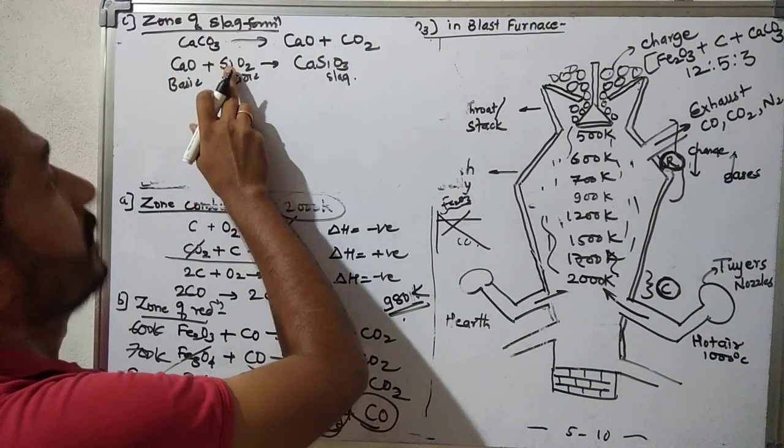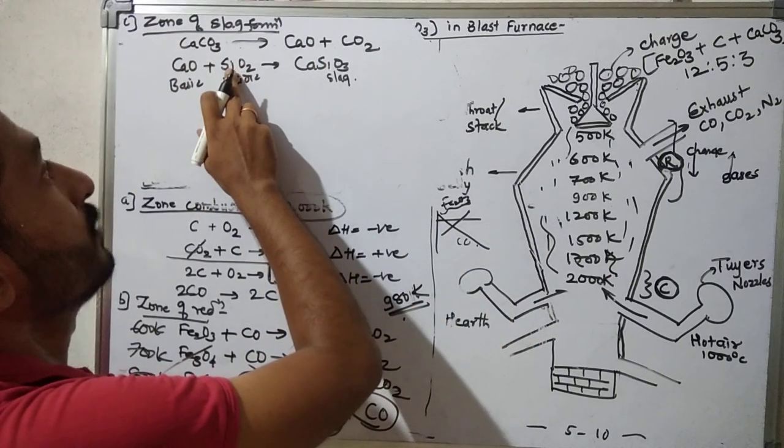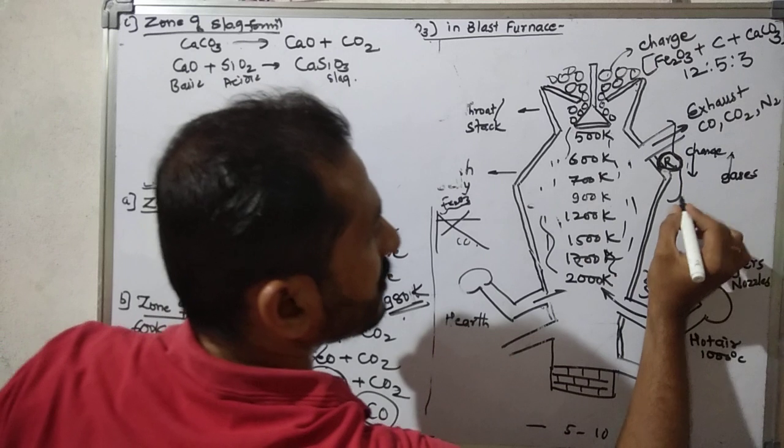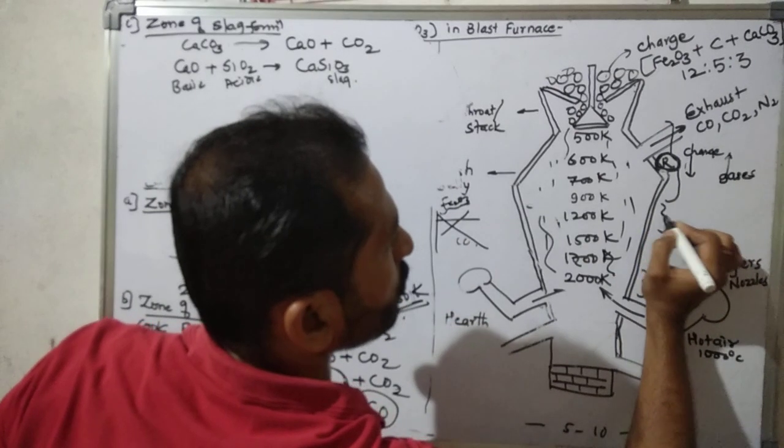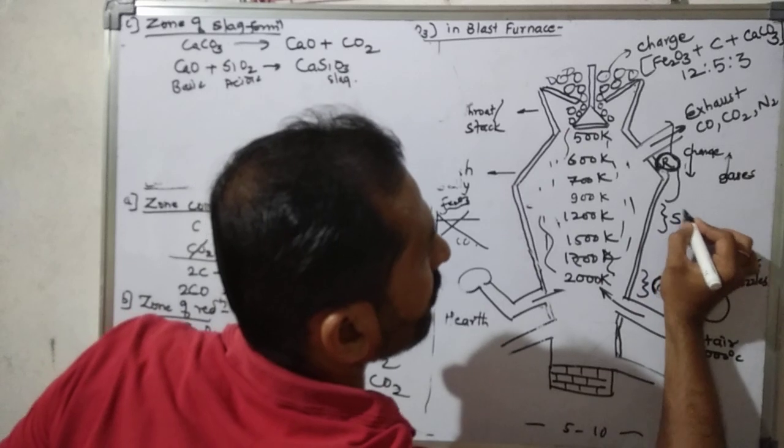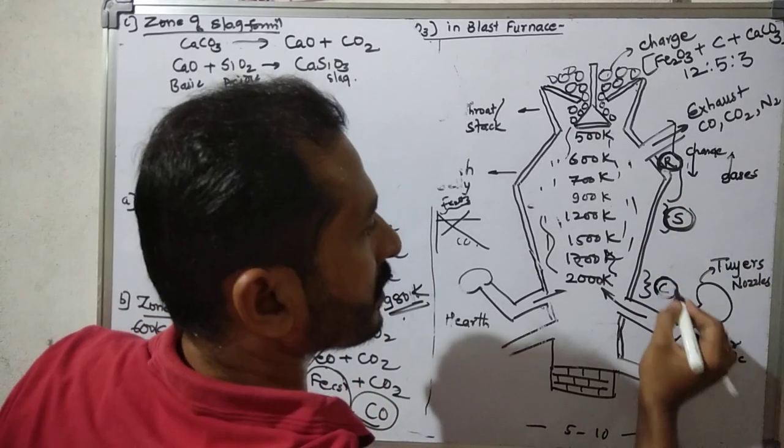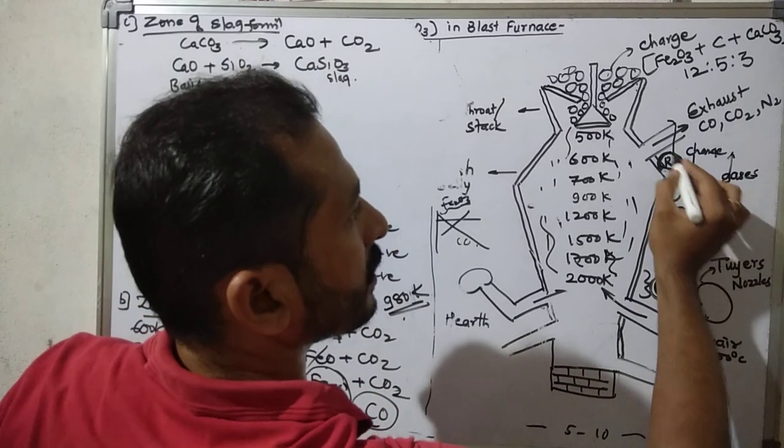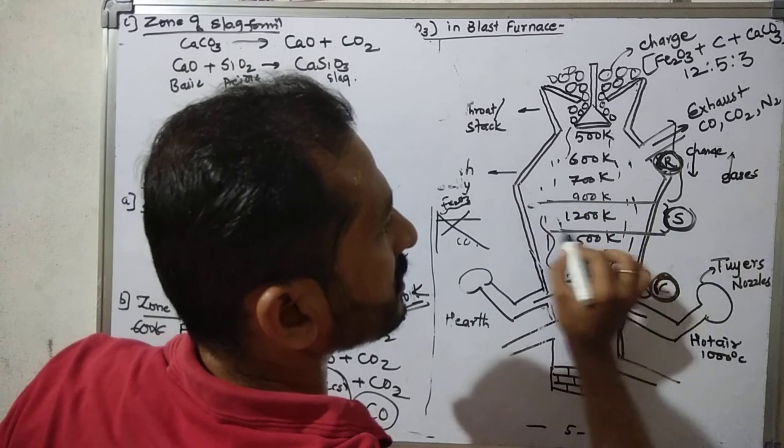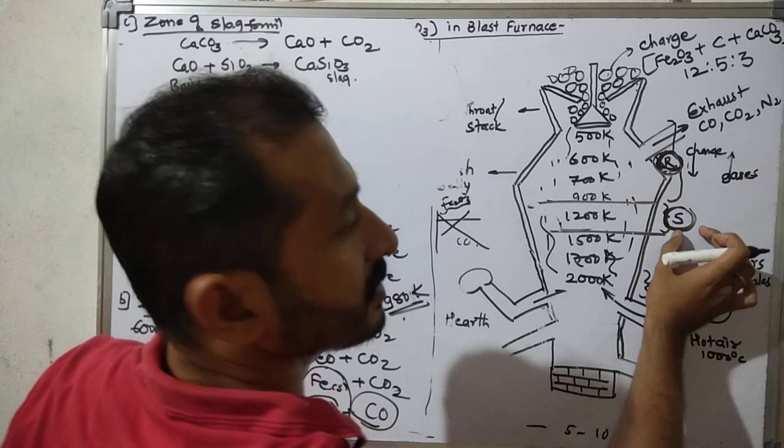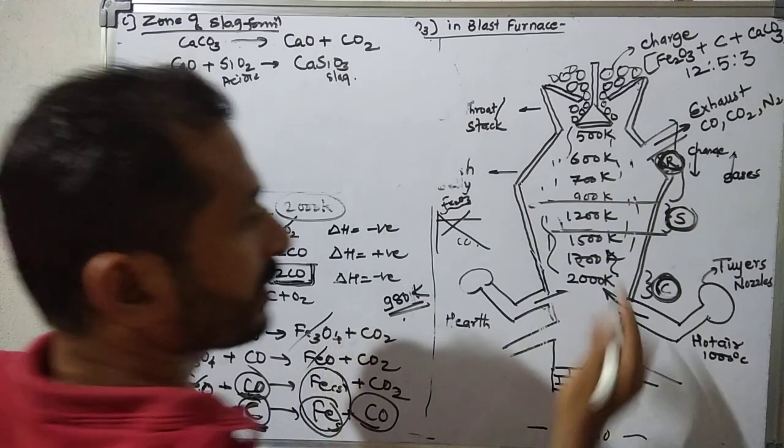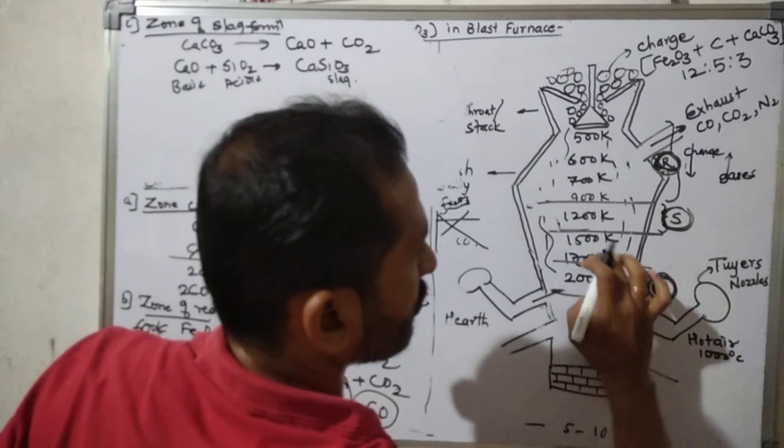Calcium oxide plus SiO2 forms slag. This slag formation region is near about 1200 to 1500 Kelvin. The combustion zone, reduction zone is above it. Between 1200 to 1500K is the slag formation region. Between 1700 to 2000 Kelvin at the bottom is the combustion zone.